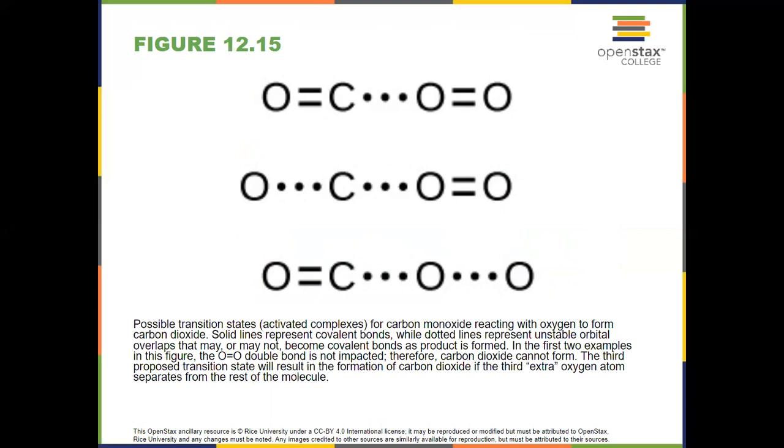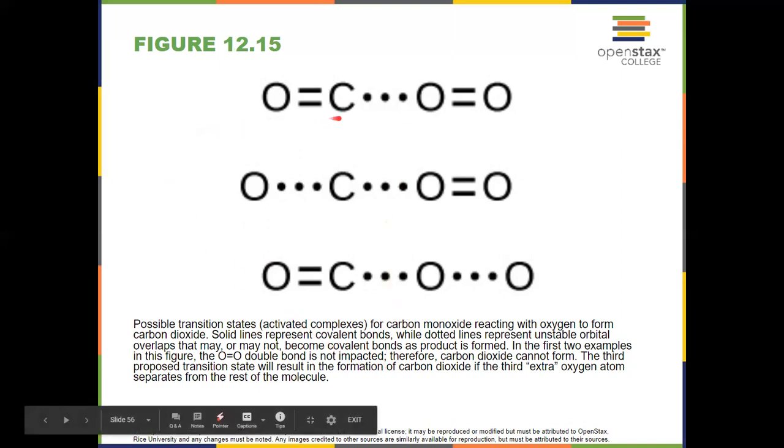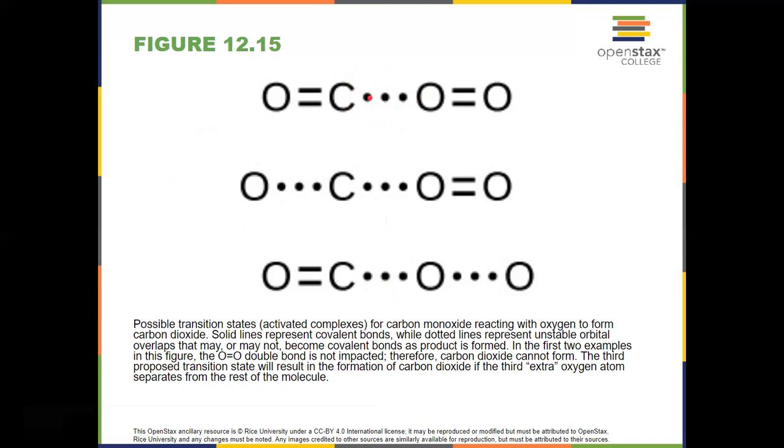If I'm trying to take carbon monoxide CO and oxygen O2 together to form CO2, I need to form the new CO bond, and I also need to break the previous oxygen bond between the two oxygens. So looking at three possible transition states here, this one on the top shows a carbon-oxygen bond forming. That's what those dots represent. But I didn't break the old oxygen bond. So that doesn't work, even though it had the right orientation.